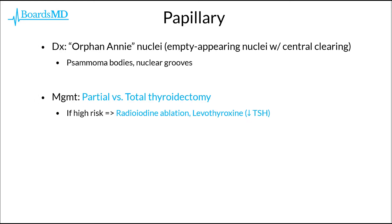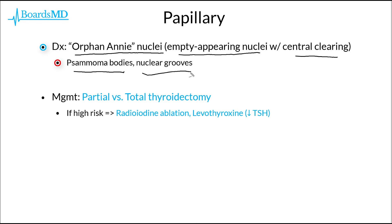In order to diagnose papillary carcinoma of the thyroid, we are going to need a tissue sample, which is going to reveal orphan Annie nuclei. These orphan Annie nuclei classically will have empty appearing nuclei with a central clearing. Additional features that we will see histopathologically include psammoma bodies and nuclear grooves.